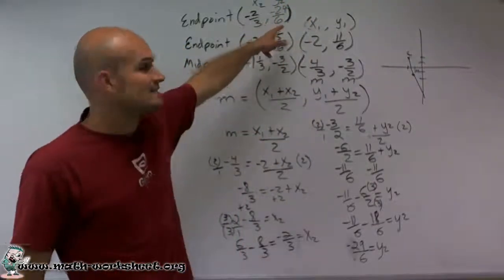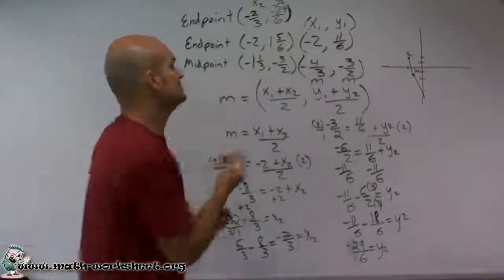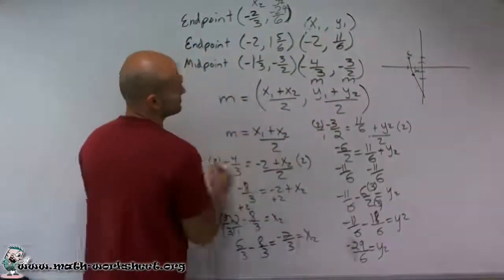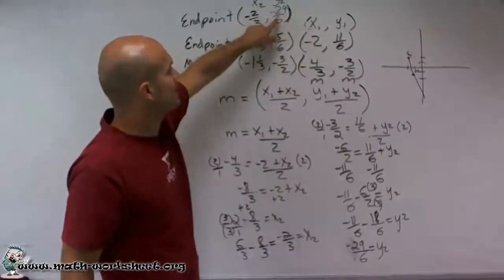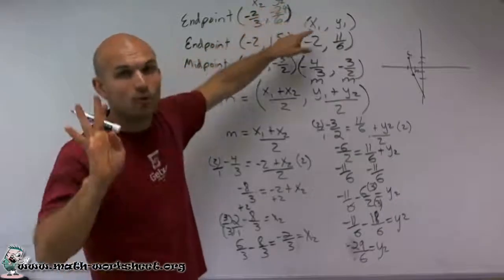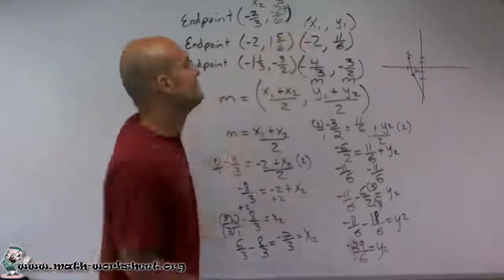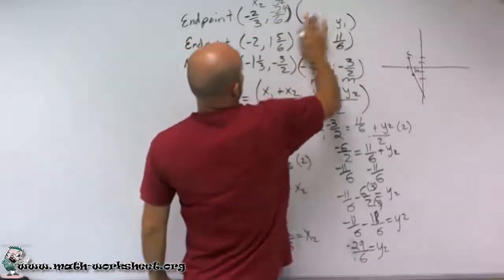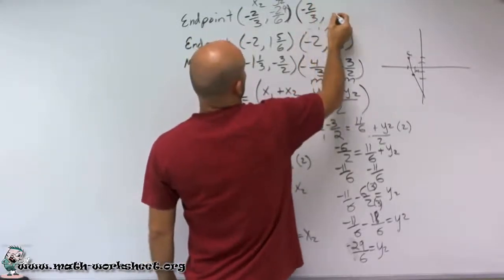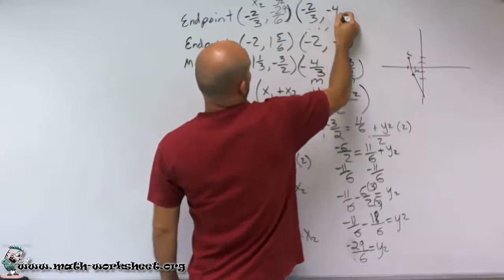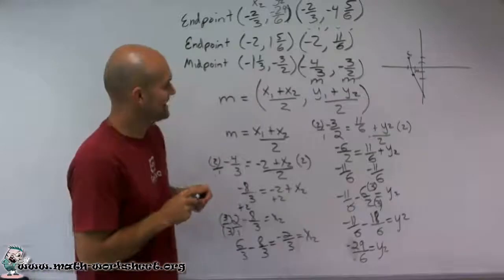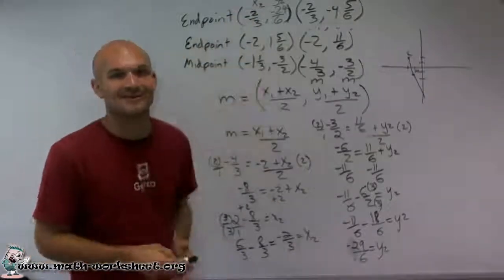And if you want to write that as an improper fraction, you could also just say that your endpoint would be—so to write this as a mixed fraction, say, all right, how many times is 6 going to 29 as a whole number? Well, 6 goes to 29 four times and with the remainder of 5. So you could also write it as negative 2/3 comma a negative 4 and 5/6. So there you go. There's two ways to represent the answer and a lot of work for you. Thanks.